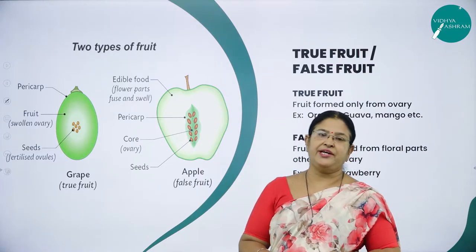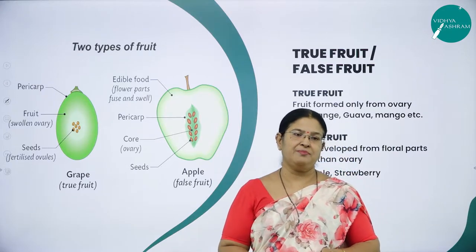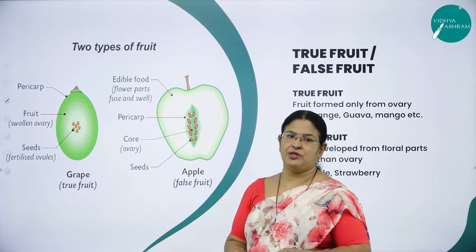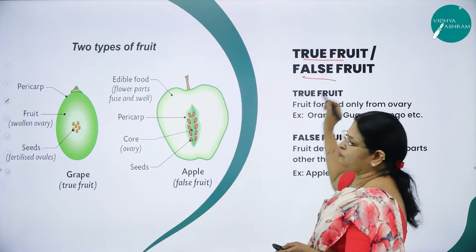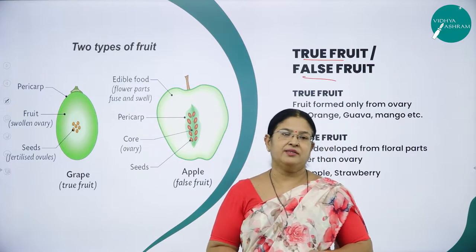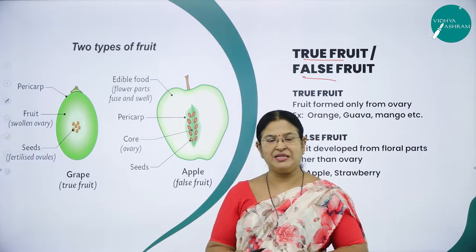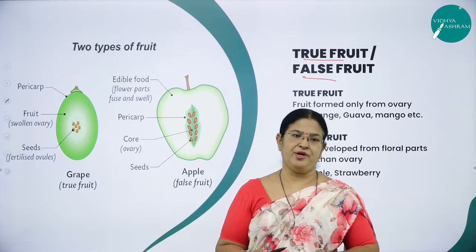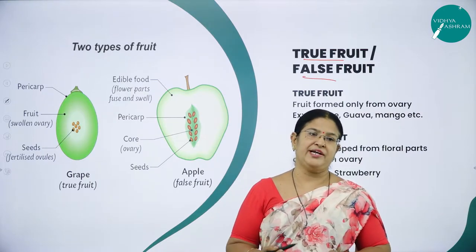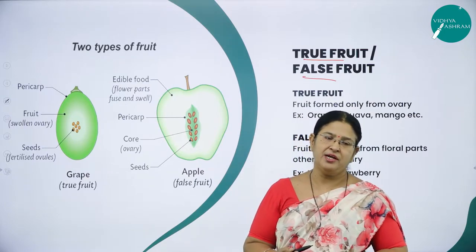What are we going to study in today's session, which is the last session of this chapter? We are going to continue about the types of fruits — true fruit and false fruit — followed by two very important special modes of reproduction: Apomixis and Polyembryony. Then we will summarize the important concepts of chapter 2, Sexual Reproduction in Flowering Plants.